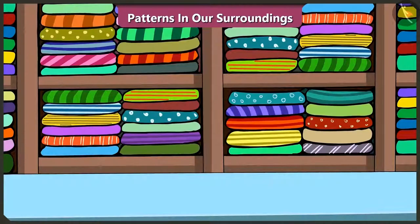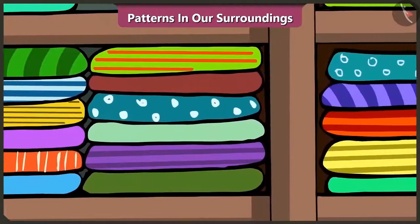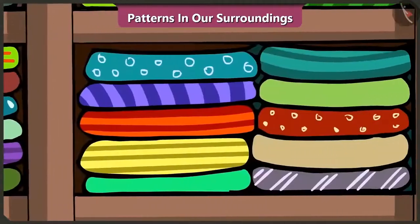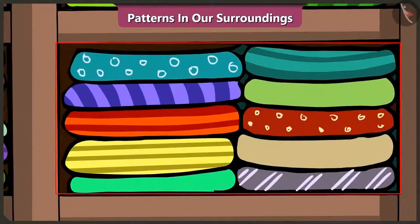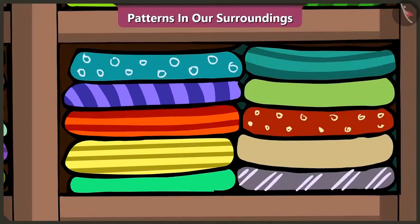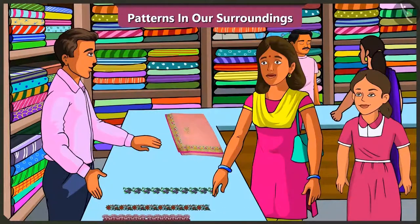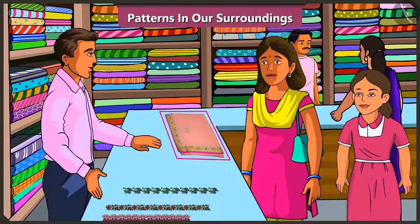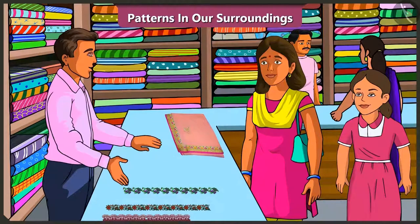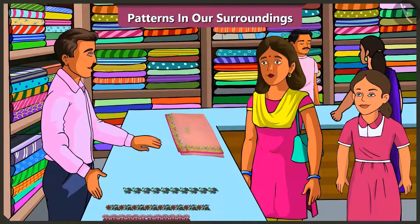Look, Vinny, all the clothes here have some pattern on them. Oh yes. In all these clothes, some shapes or designs have been repeated again and again. Rightly said, Vinny. Brother, we like this patterned lace. Please use this one on my saree. Okay, you can collect your saree tomorrow. Thank you, brother.